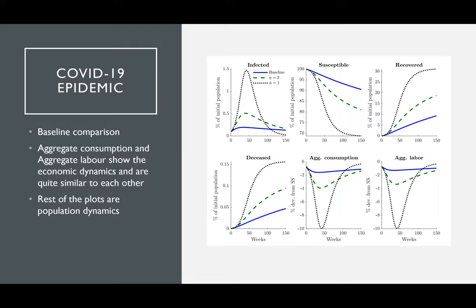We look at a baseline comparison of some impulse responses: aggregate consumption and aggregate labor, which show the economic dynamics and are quite similar to each other. The remaining plots — infected, susceptible, recovered, and deceased — show the population dynamics.